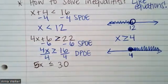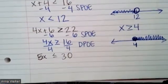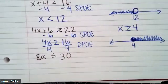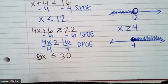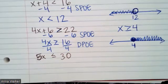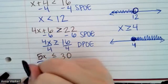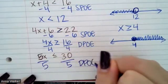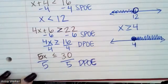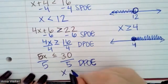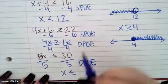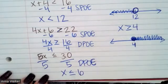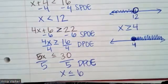Let's look at the last one. We have 5x is less than or equal to 30. So in order to solve this problem, multiplication is happening between the coefficient and the variable. So I am going to use the DEPO property to undo the inequality. And I'm left with x is less than or equal to 30 divided by 5, which is 6.